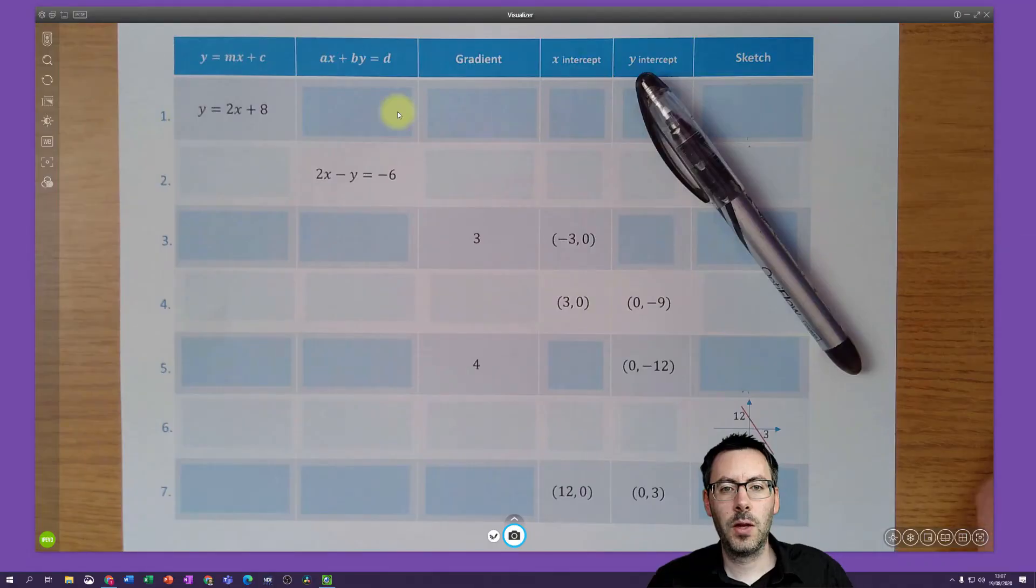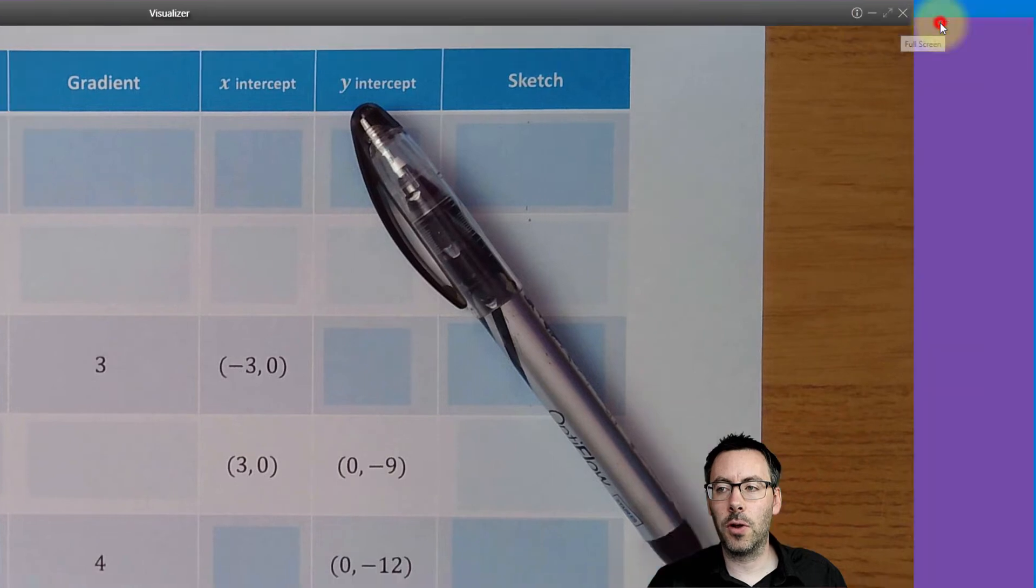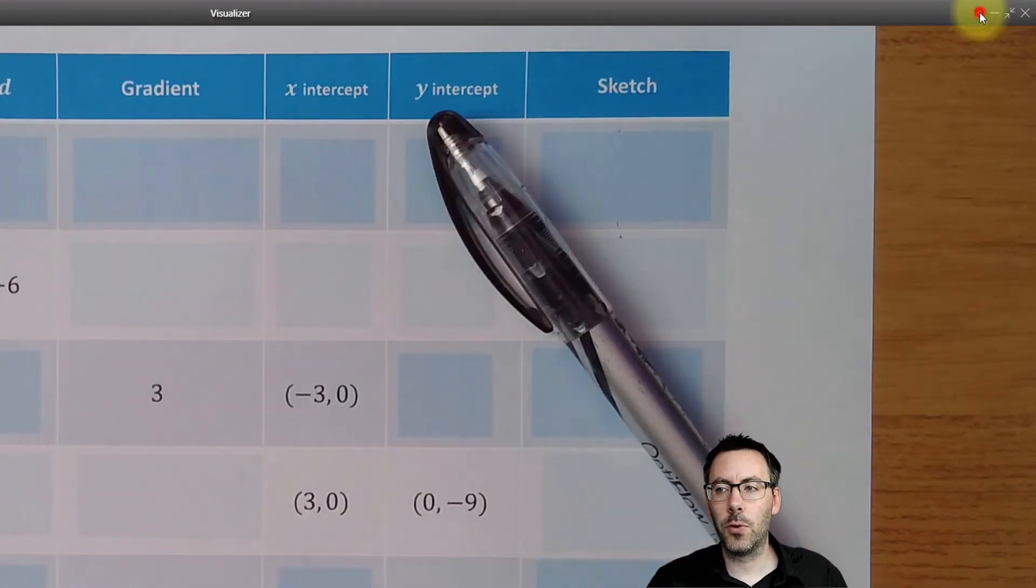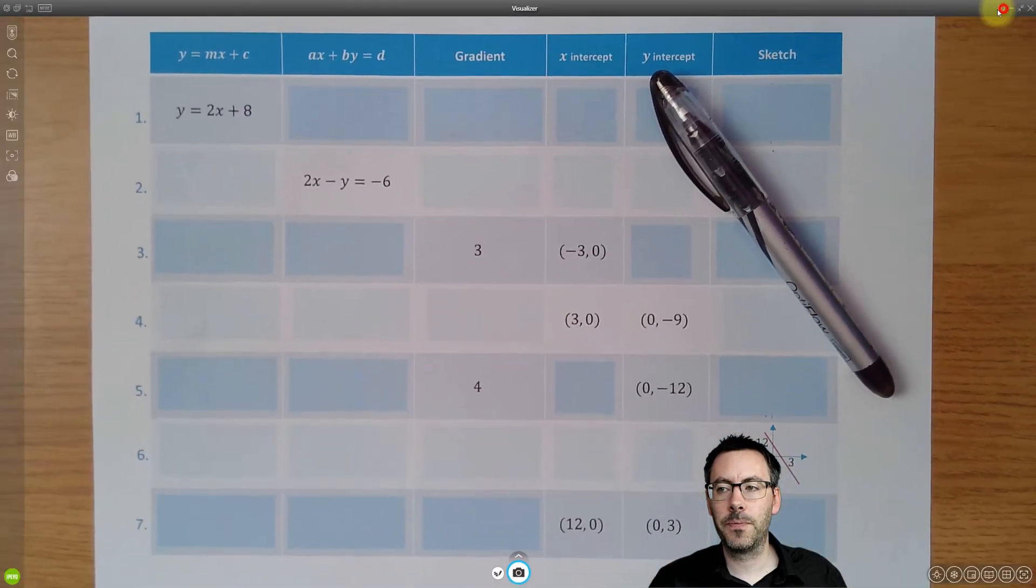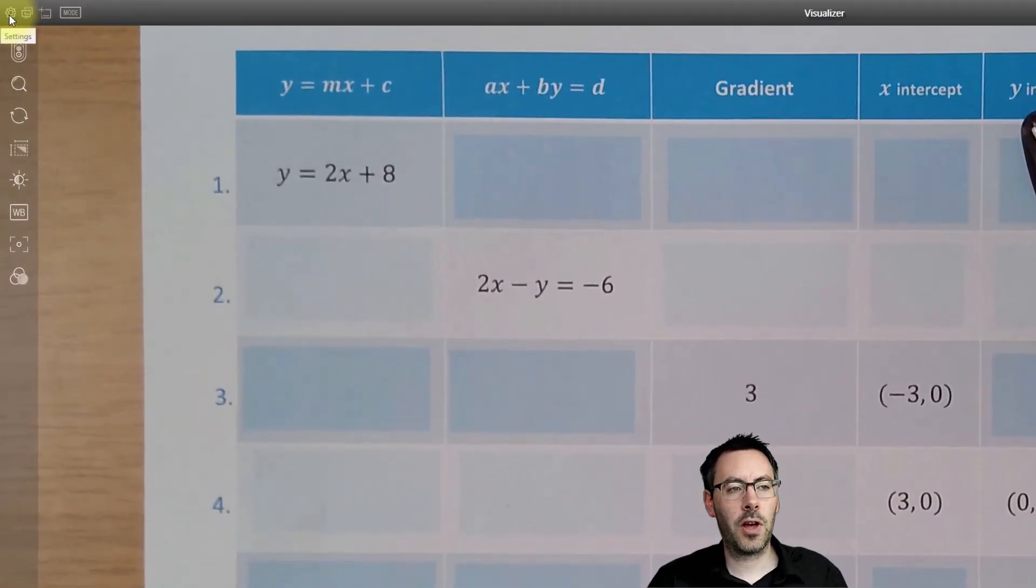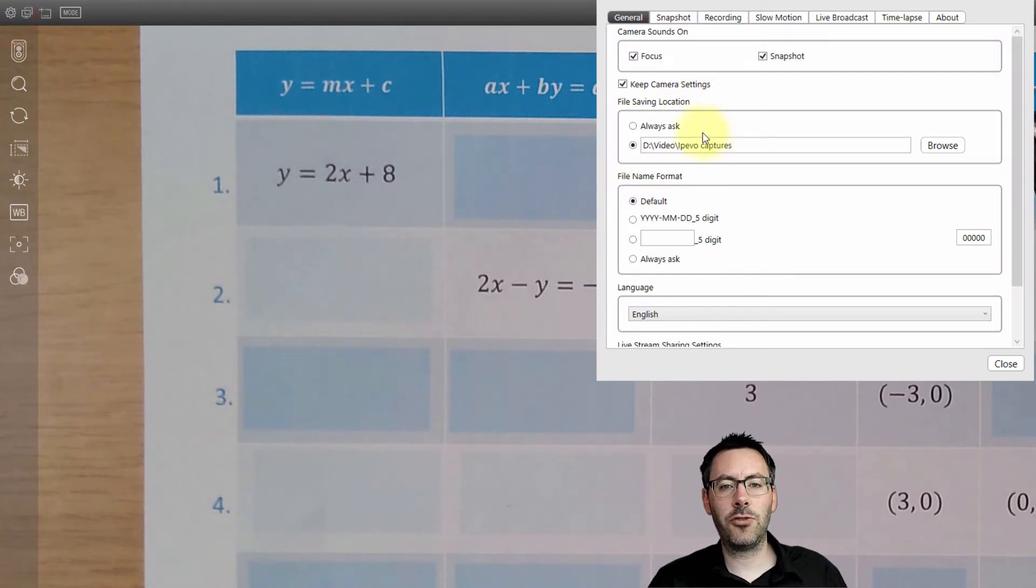Let's jump into the software and have a look at the basic functions. Starting at the top of the Visualizer software, on the right-hand side, we've got a full-screen button. We've also got an information button which tells us about the camera we're currently using. Over on the left-hand side, we've got a settings button. The only real thing you need to change in here to start with is where you're saving your pictures and videos.